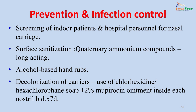To prevent outbreaks and control identified ones, routine screening of indoor patients and hospital personnel for nasal carriage is needed, specifically in surgical and burns wards. Surface sanitization using quaternary ammonium compounds should be performed regularly. Alcohol-based hand rub should be used between every patient. Carriers, once identified, should be decolonized using chlorhexidine or hexachlorophene soap, or 2% mupirocin ointment applied inside each nostril twice a day for 7 days.